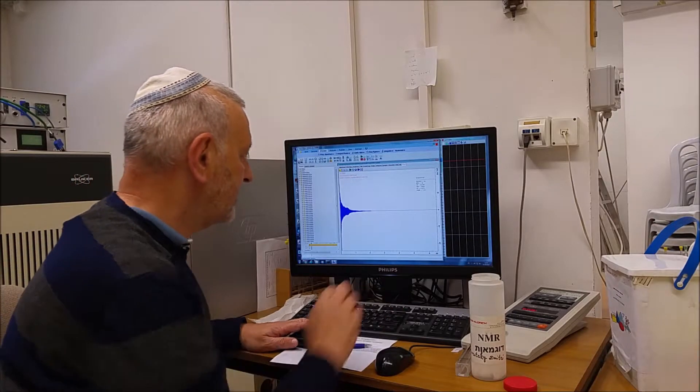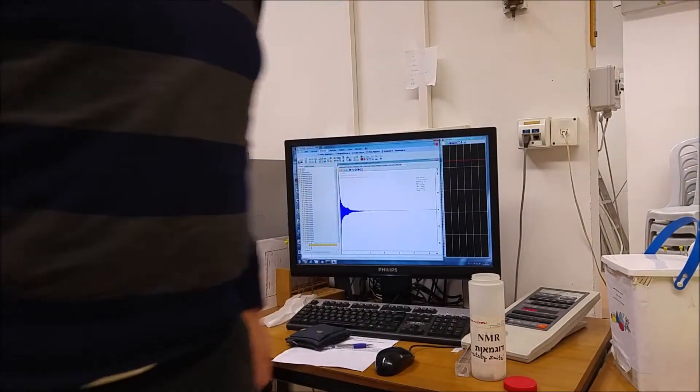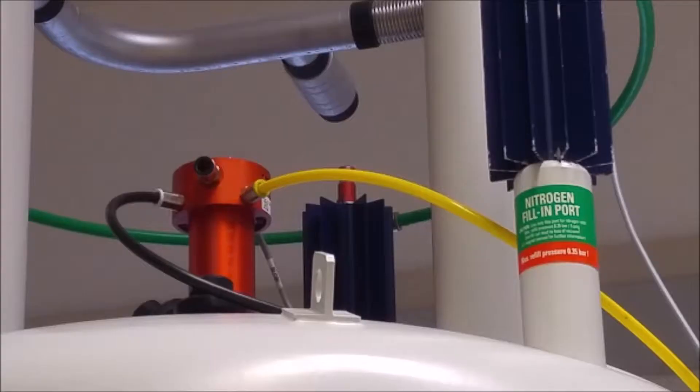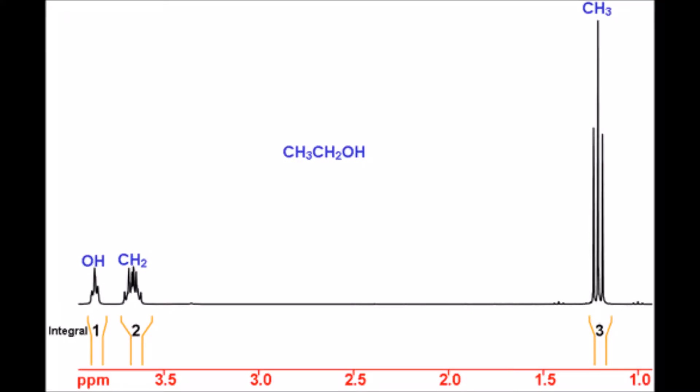NMR can be used to analyze quite complex molecules, but let's take a simple example. For example, the proton or hydrogen spectrum of ethanol, which is normal alcohol, gives you three different types of hydrogen in the molecule: the CH3, the CH2, and the OH.